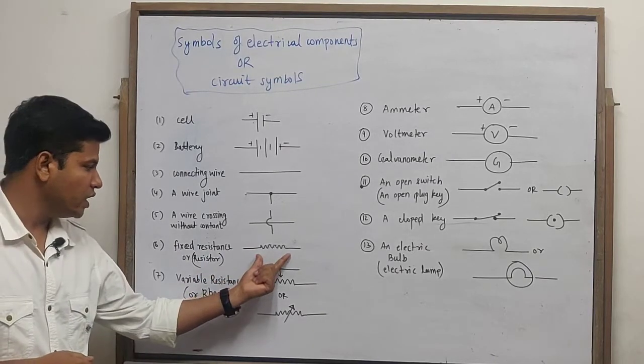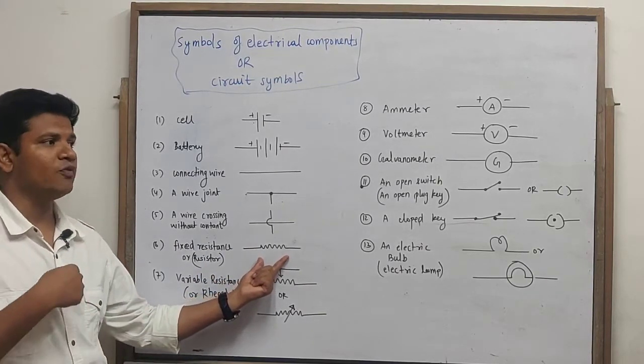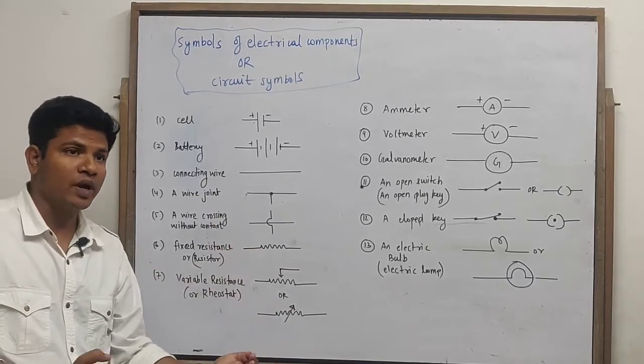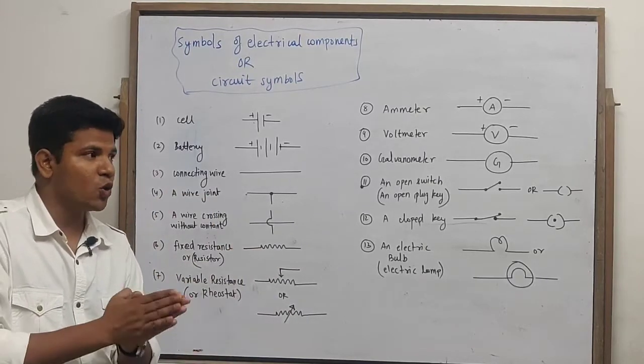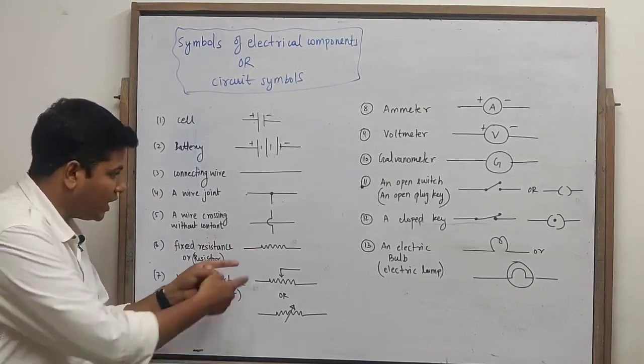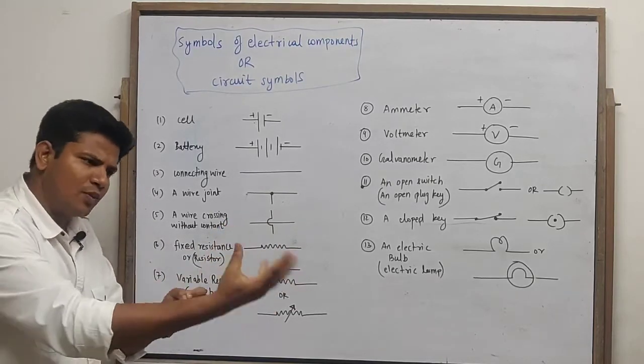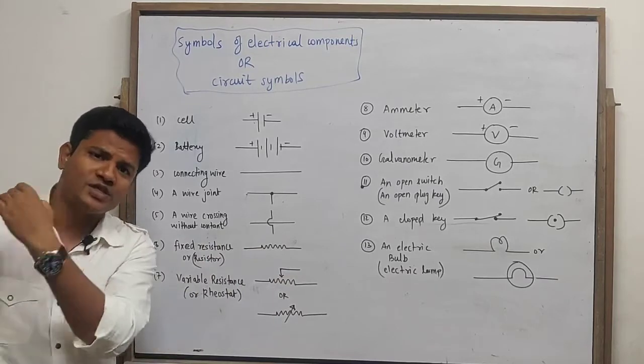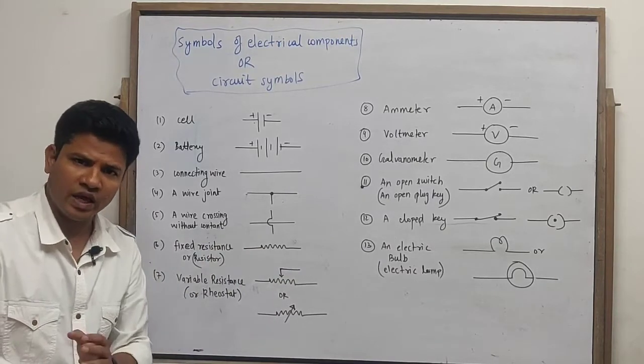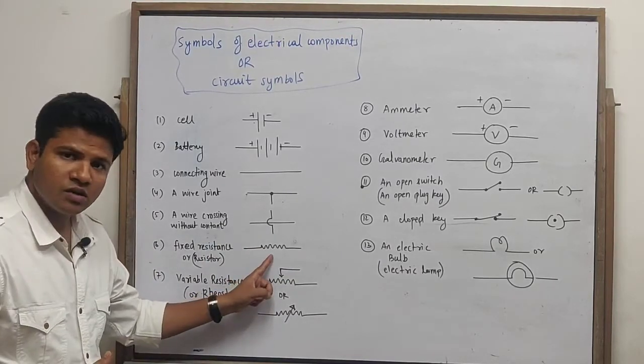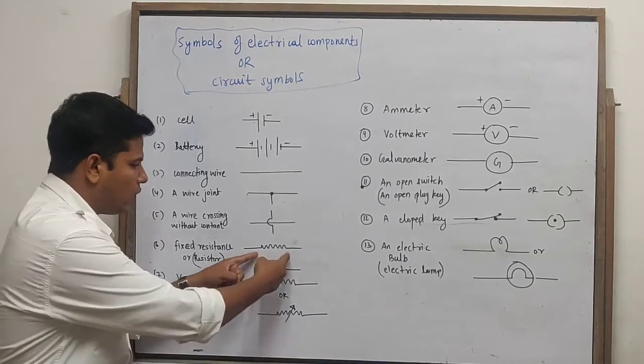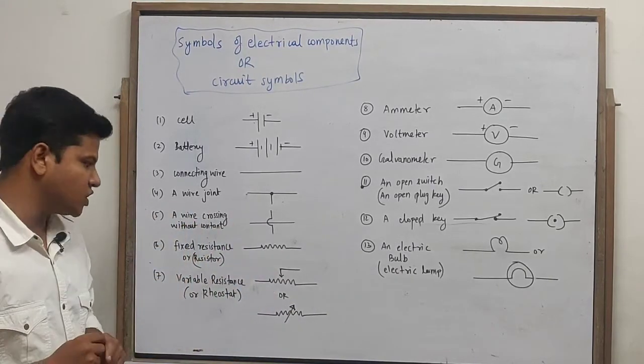This is a fixed resistance. Now, if I made a bulb in electrical symbol, then I made a bulb. If there is any resistance in our circuit, then we can represent a fixed resistance.